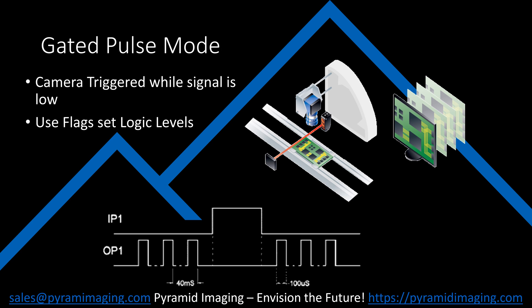In this example, regular pulses are sent as long as the signal is active. In this picture, we can see a camera is being continuously triggered, but when the sensor's signal becomes high, the pulses stop. They resume once the signal returns to low.